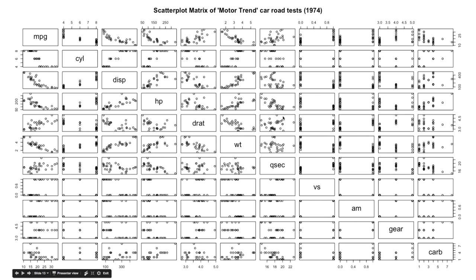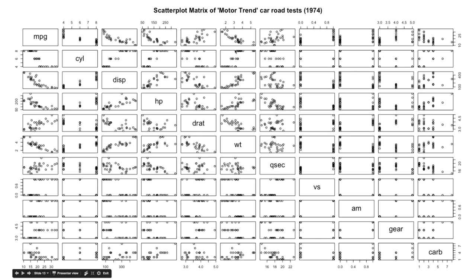You won't usually encounter a scatter plot matrix — it's something a data analyst would use when exploring a dataset to get a broad overview of possible linear or non-linear relationships between variables. For example, we can see a suggestion of a linear relationship between miles per gallon of a car and its weight. A data analyst would notice that and then explore the relationship to see how the weight of the car affects its miles per gallon.